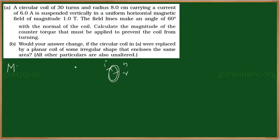So it is hanged vertically in a uniform field like this. The normal to the area of this coil is making some angle theta with the field direction.